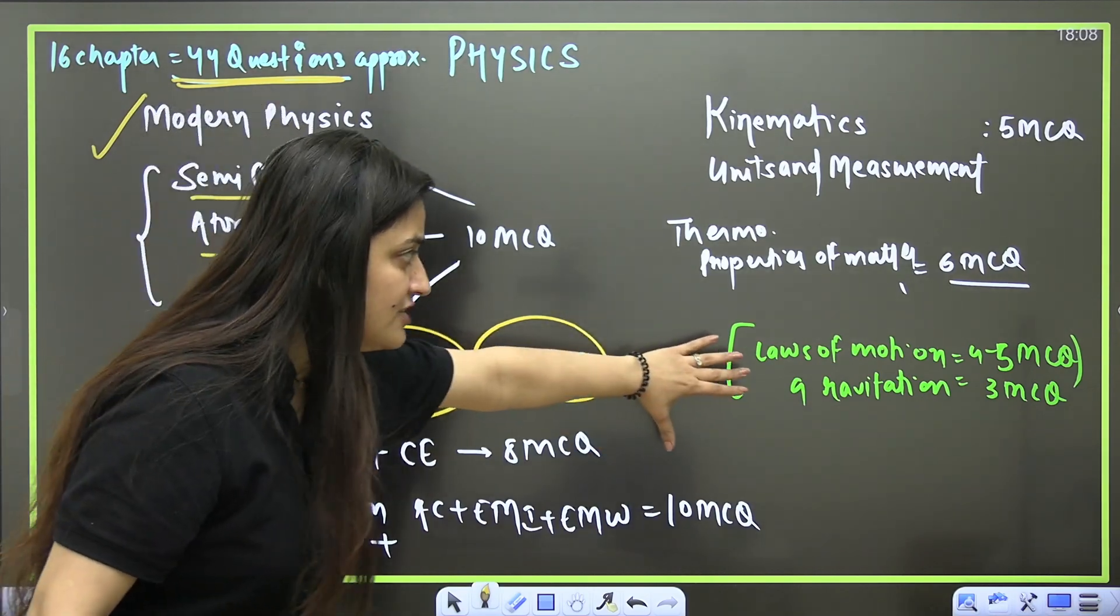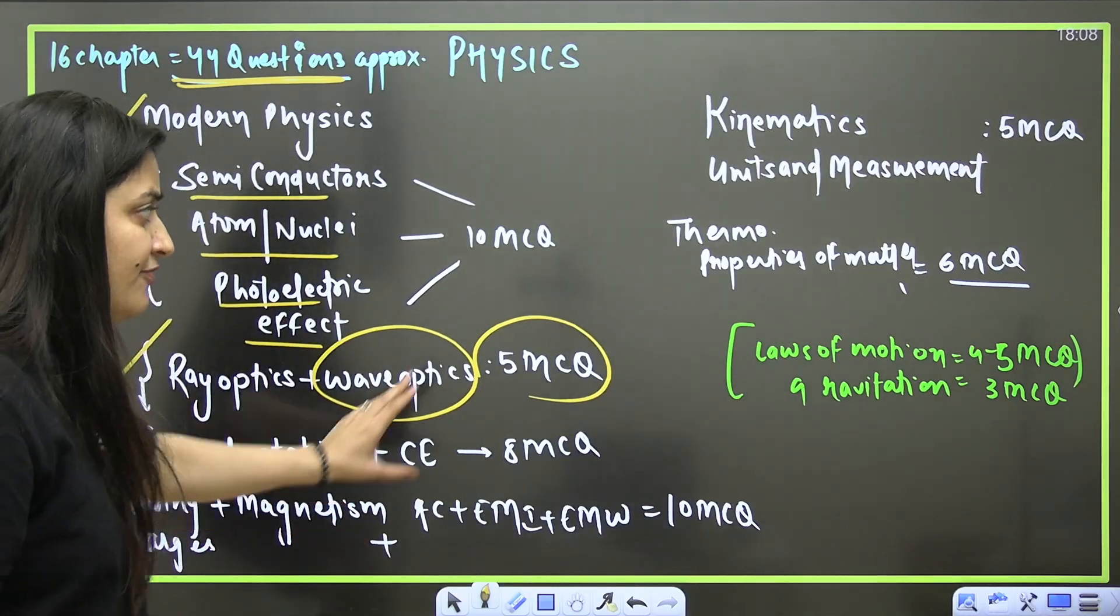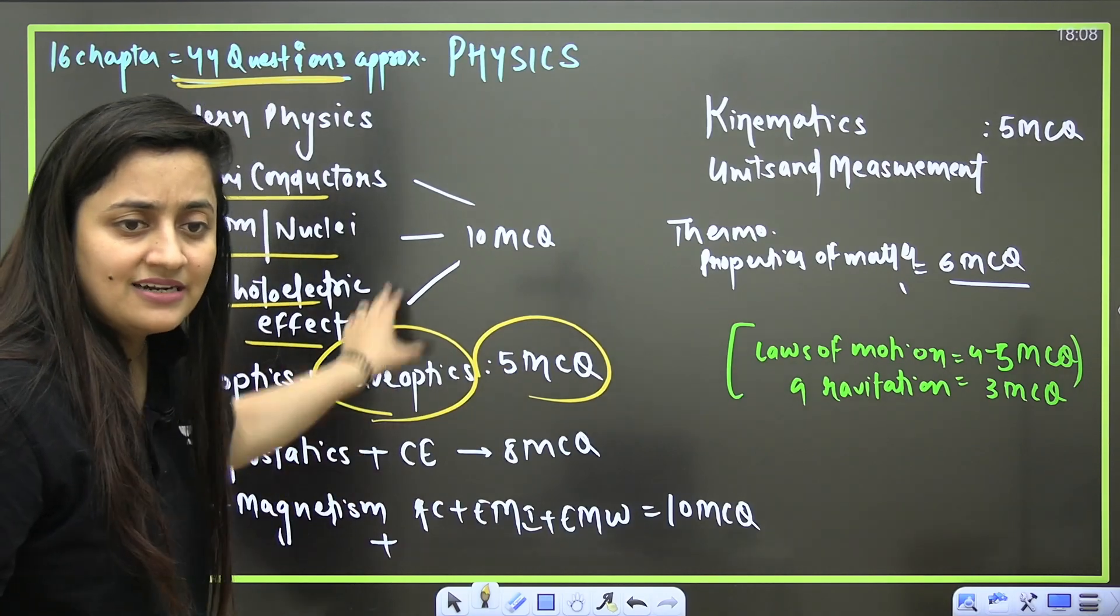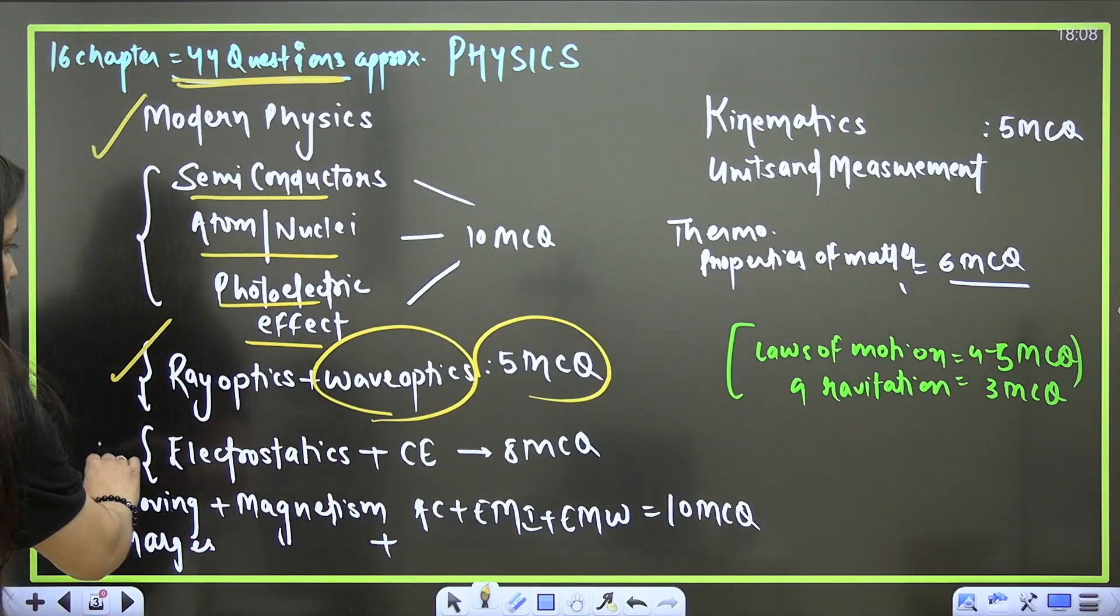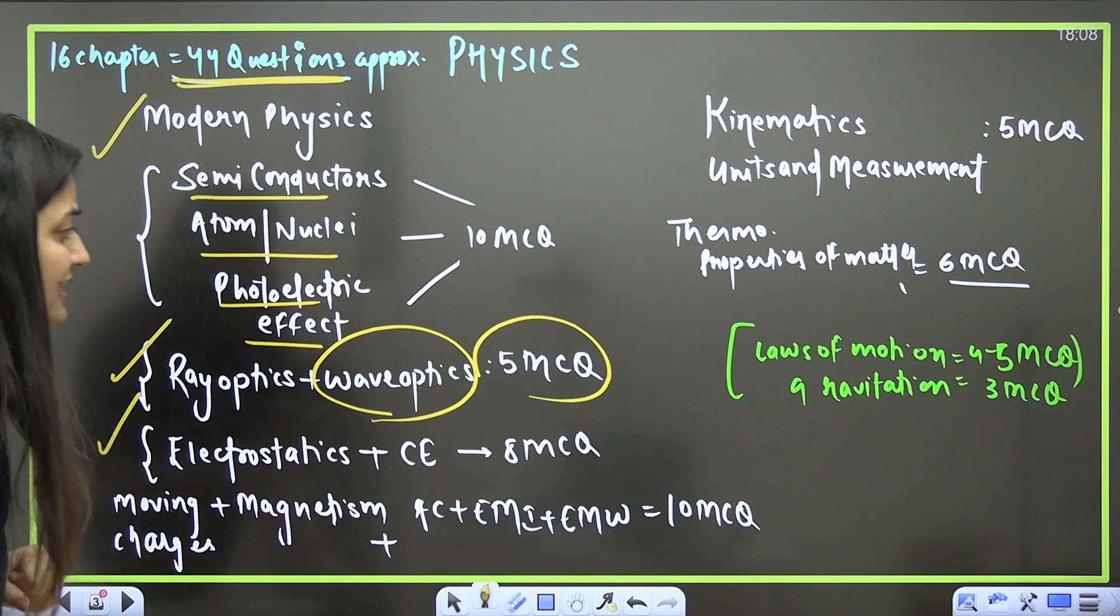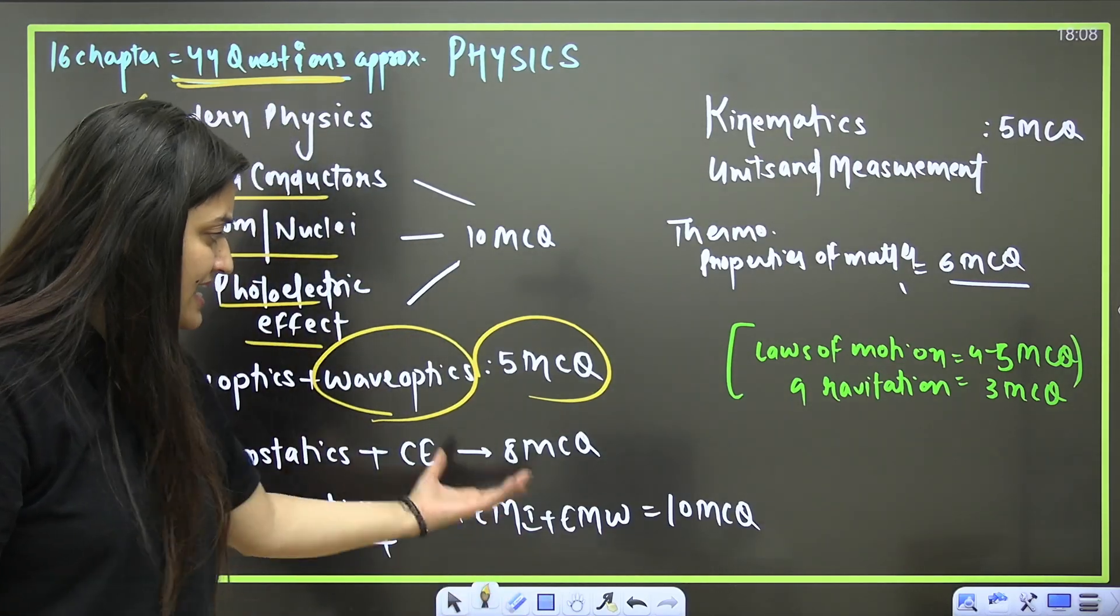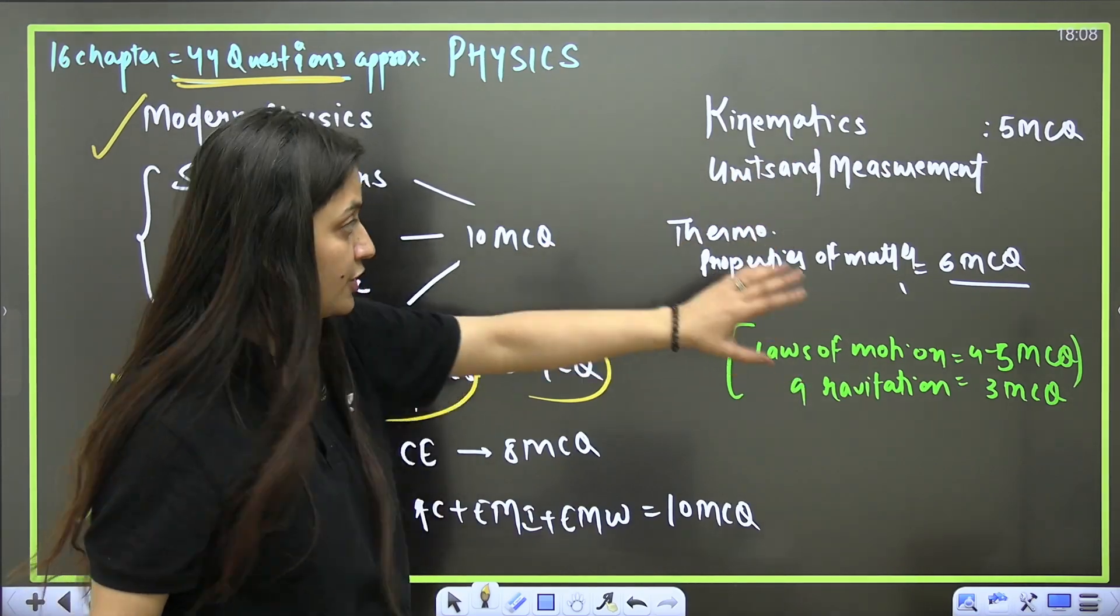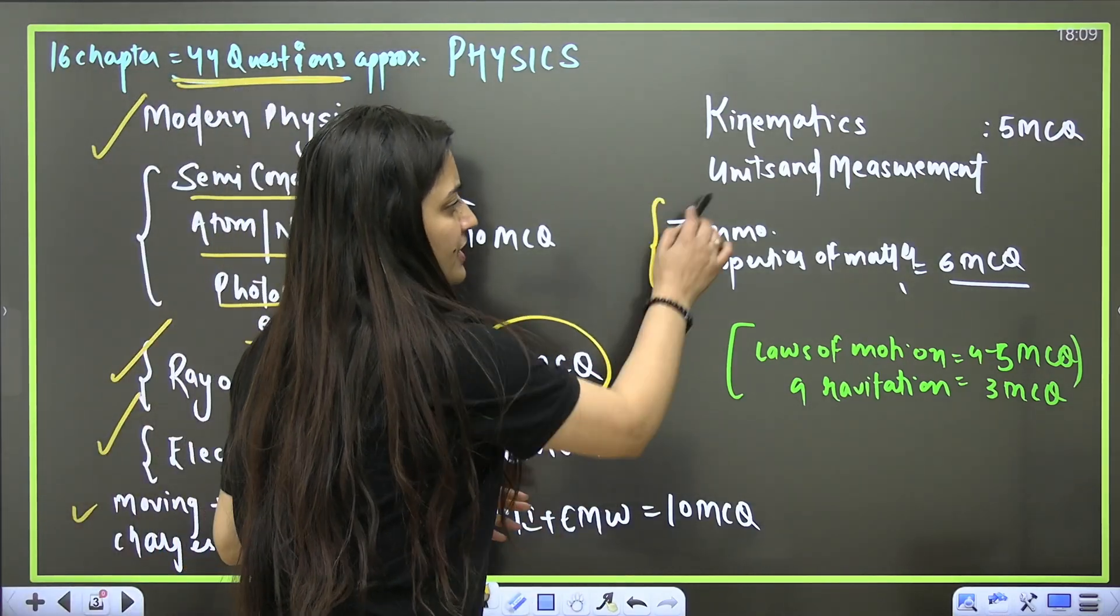If these chapters are clear, you can move to this segment as well, but if you don't want to, you can complete these chapters only. These 16 chapters can give you 44 questions approximately. Electrostatics and current electricity, eight MCQs. Moving charges, magnetism, alternating current, EMI, EMW—10 MCQs. Then kinematics, units and measurement—5 MCQs.